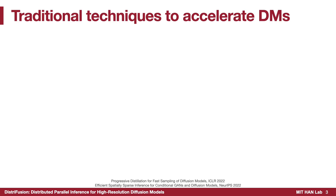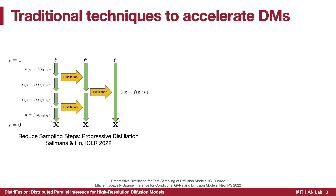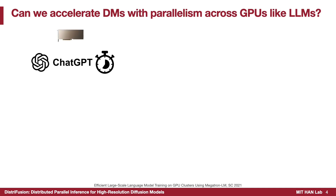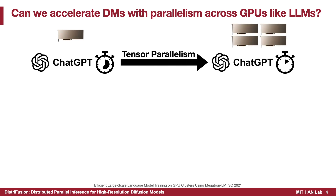Recent efforts to accelerate diffusion models mainly focus on two approaches: reducing sampling steps such as progressive distillation, and optimizing model inference such as SIGE. As computational resources grow rapidly, leveraging multiple GPUs to speed up inference is appealing. For example, large language models have harnessed tensor parallelism across GPUs, significantly reducing latency.